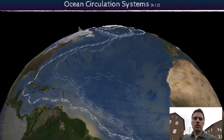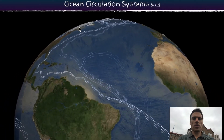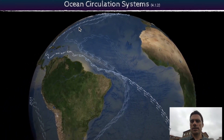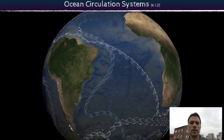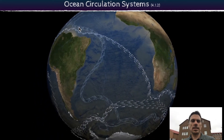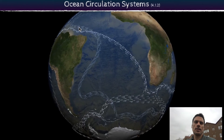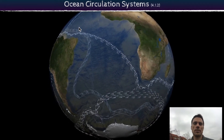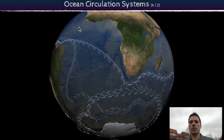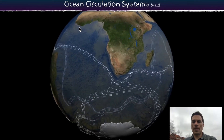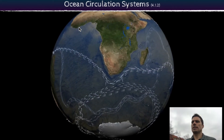Hi and welcome to a quick one on thermohaline circulation. In this image you see ocean circulation in general and what we call the global conveyor belt moving around the planet. This comes from NASA — you can get all their visualizations if you go to NASA's visualization website, just Google that. What you see here is how water circulates around the planet.